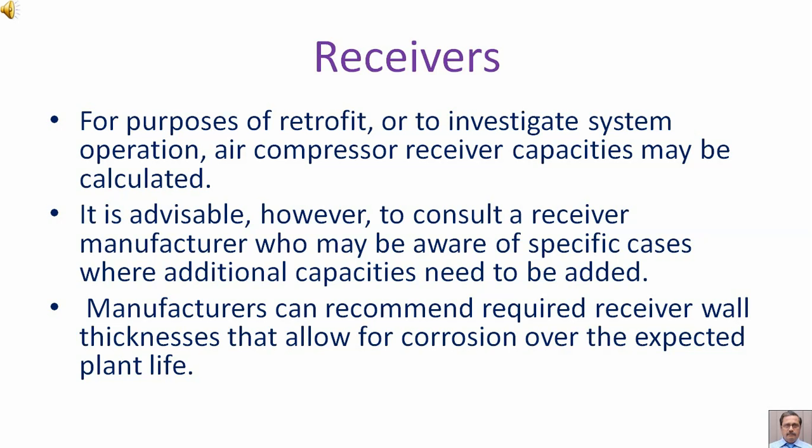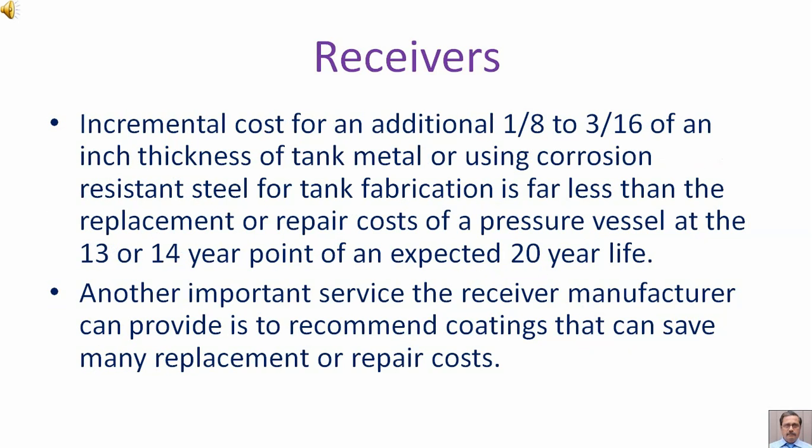Manufacturers can recommend required receiver wall thicknesses that allow for corrosion over the expected plant life. Incremental cost for an additional 1/8 to 3/16 of an inch thickness of tank metal, or using corrosion-resistant steel for tank fabrication, is far less than the replacement or repair cost of a pressure vessel at the 13 or 14-year point. Another important service the receiver manufacturer can provide is to recommend coatings that can save many replacement or repair costs.